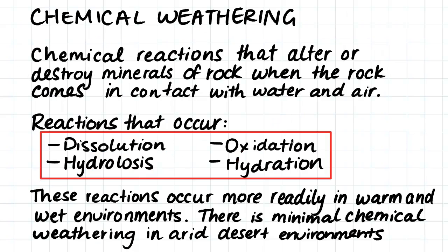Chemical weathering occurs when chemical reactions happen, and these chemical reactions alter or destroy the minerals of the rock when the rock comes in contact with water or air. The reactions that occur include dissolution, hydrolysis, oxidisation, and hydration. These reactions occur more readily in warm and wet environments, and therefore we can find minimal chemical weathering in arid desert environments.